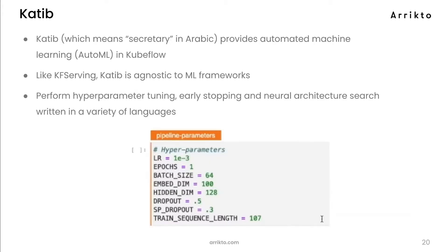The fifth component is Katib. This is what provides your AutoML capabilities. Like KF Serving, it's agnostic to the ML framework you want to use. It's also used for hyperparameter tuning, early stopping, and a couple of other things, and it's written in a variety of languages.